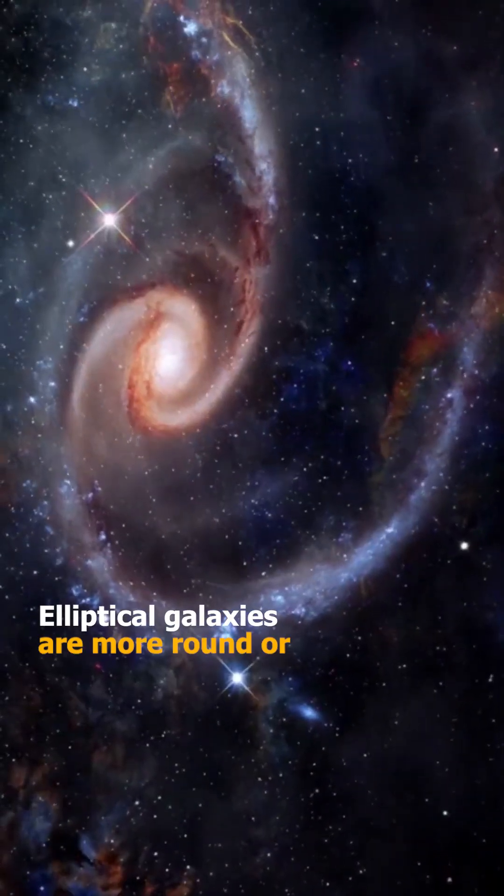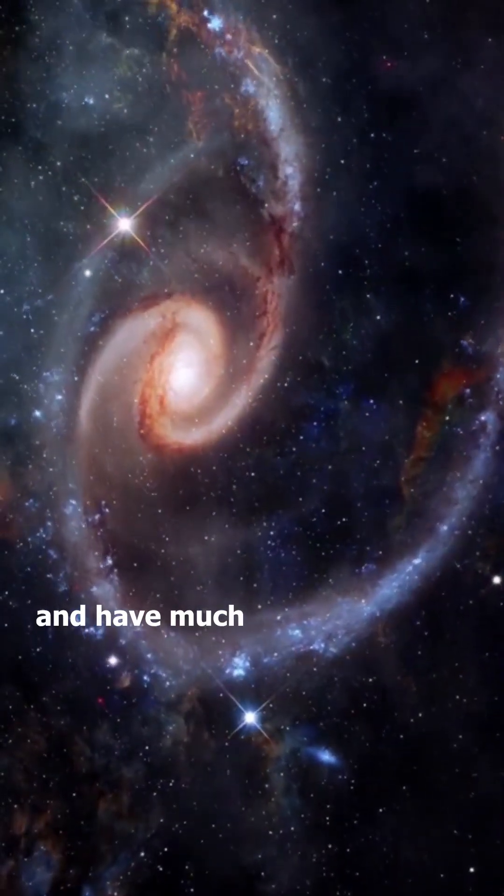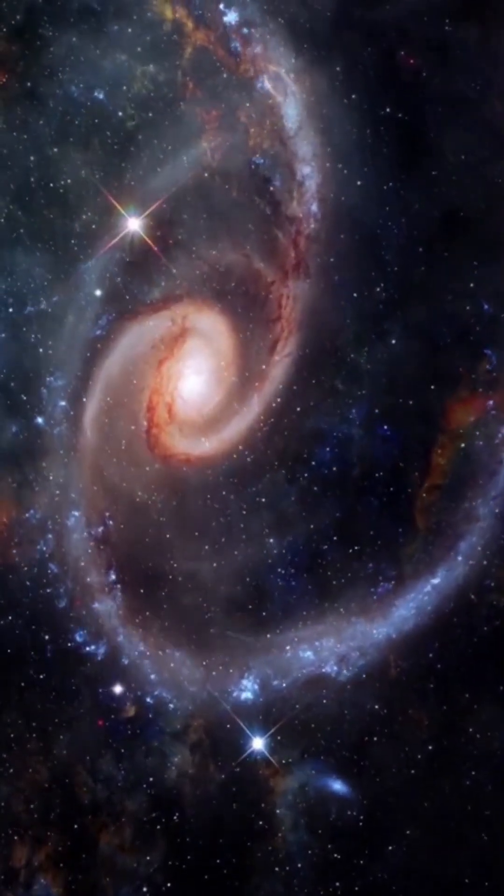Elliptical galaxies are more round or oval in shape and have much fewer spiral arms.